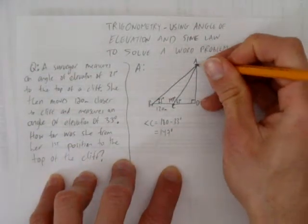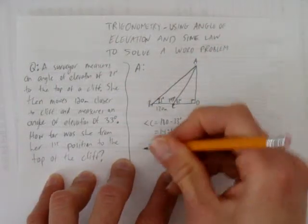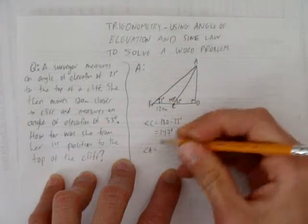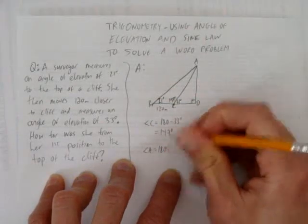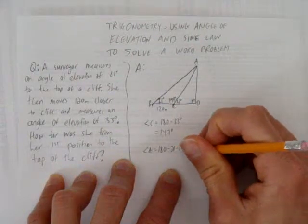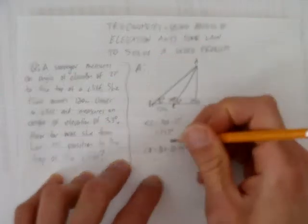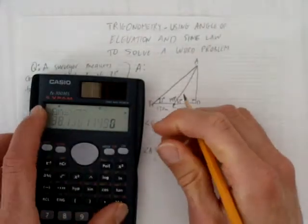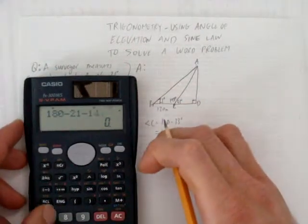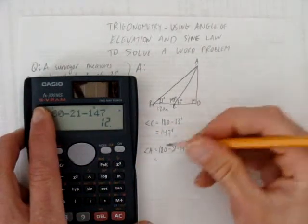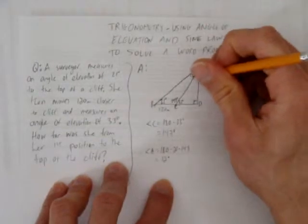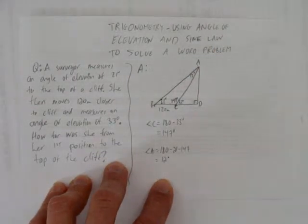We can tell angle A because we know that angle A and these two have to add to 180. In other words, 180 minus 21 minus 147 means the angle right in there is 12 degrees. We can write that in. Because now we have enough to set up sine law.